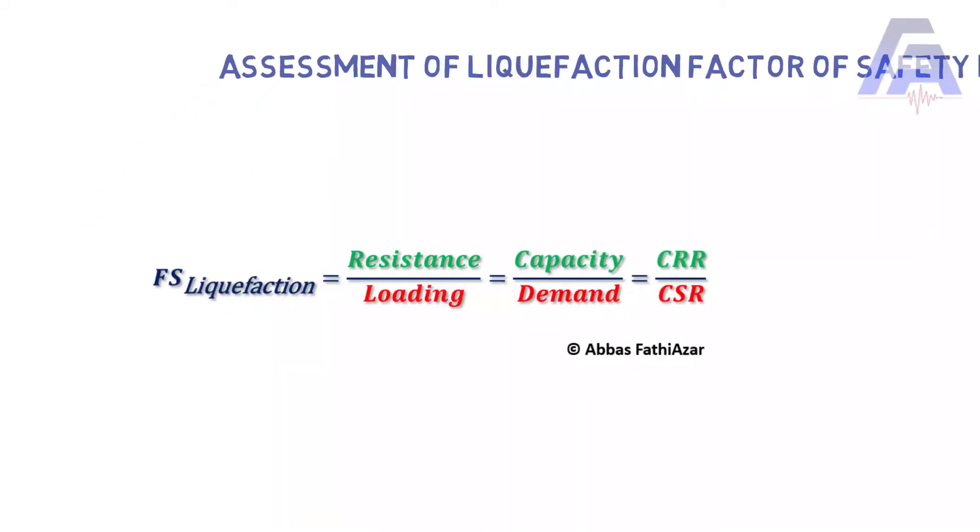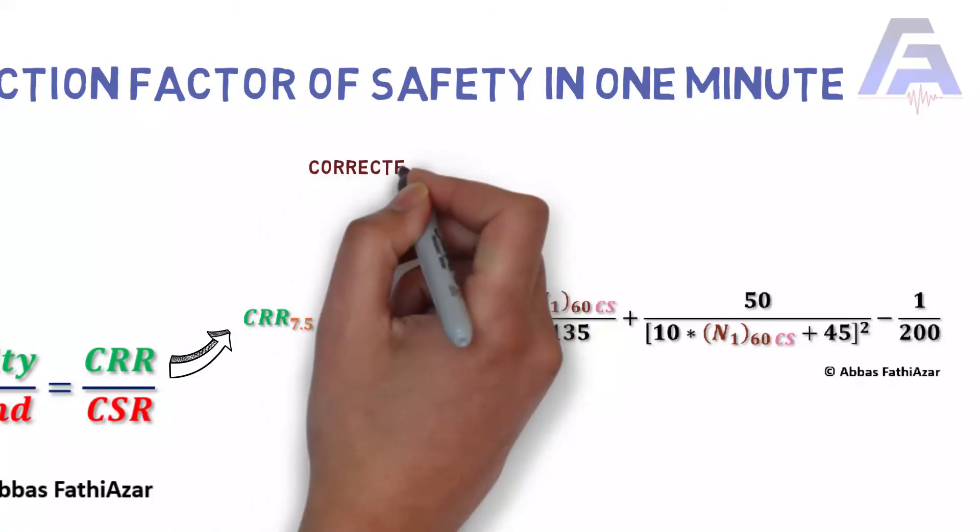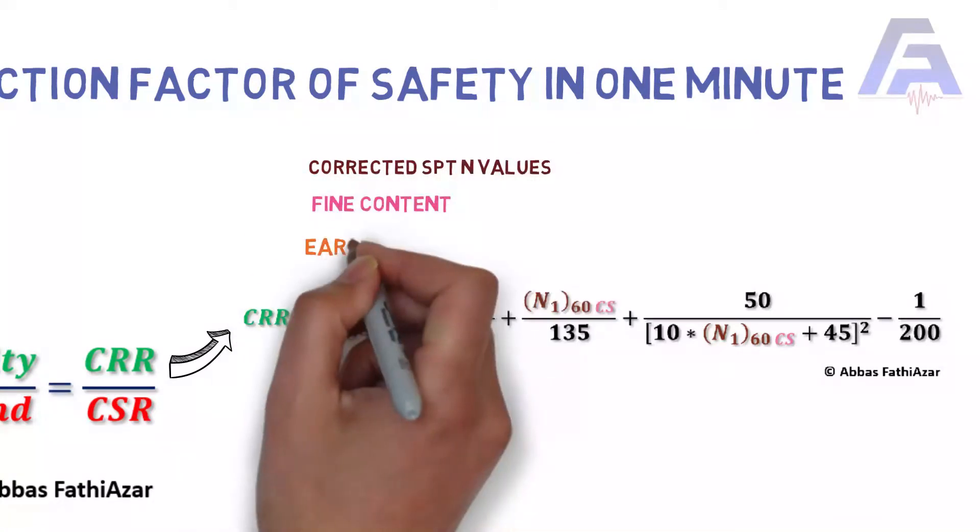Just in this case, both have a cyclic nature. So cyclic resistance ratio, CRR, which is a function of corrected SPTN value, fine content and earthquake magnitude,